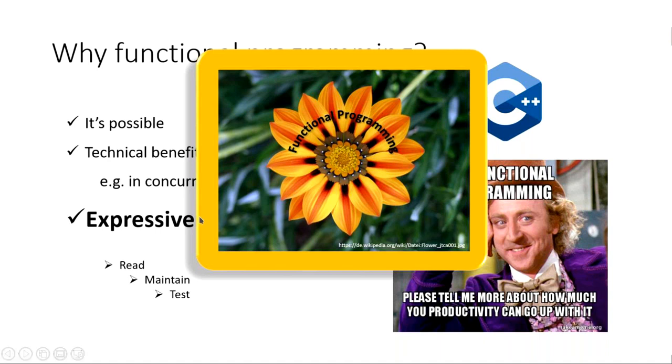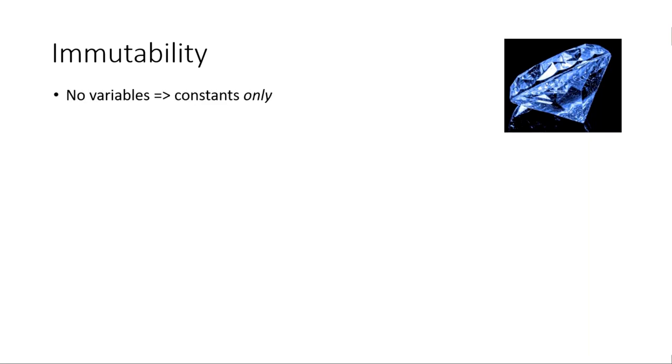In this talk, I want to focus on three very basic concepts of functional programming that we can easily apply in C++. The first one has to do with beautiful things like diamonds, because functional programs are not only beautiful, they are also rock solid like diamonds. You probably all know the saying: a diamond is const. And so are our functional programs, because we have no variables in the functional world — we have only constants.